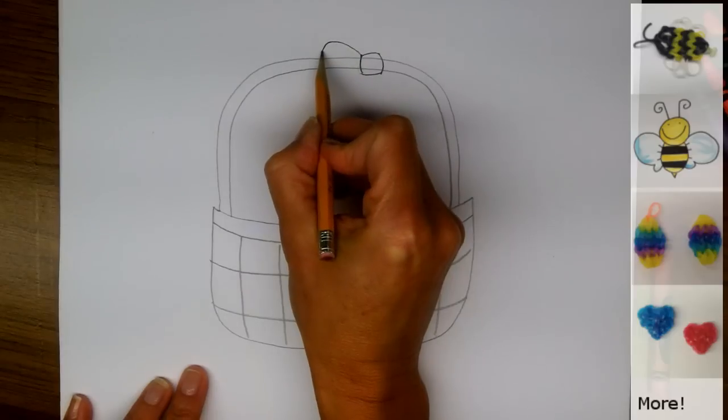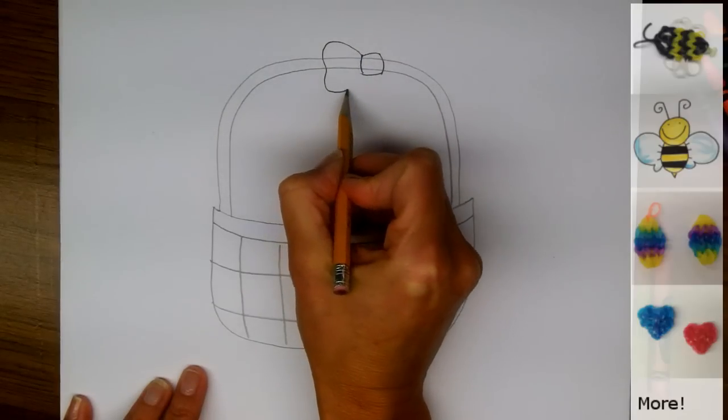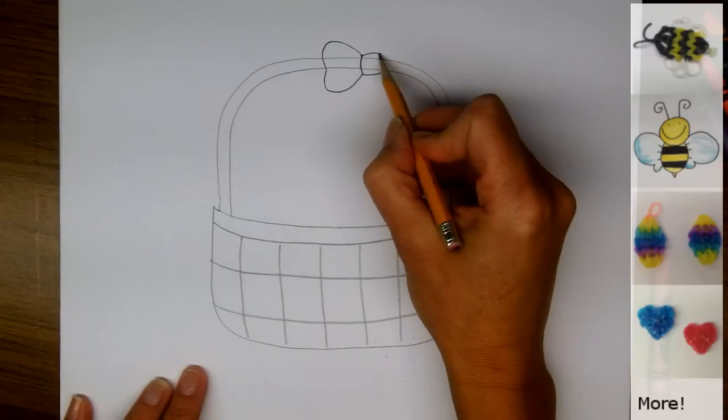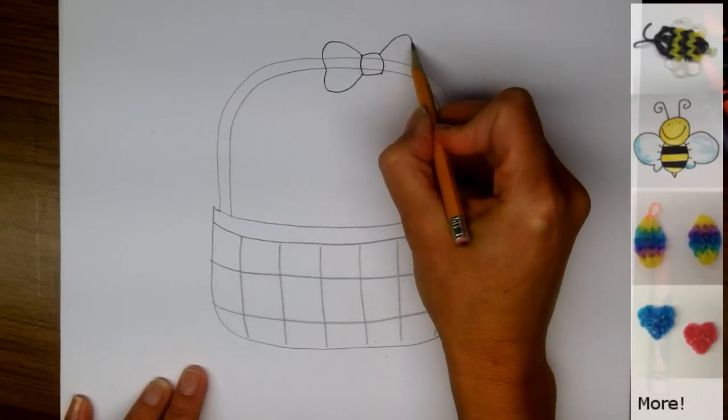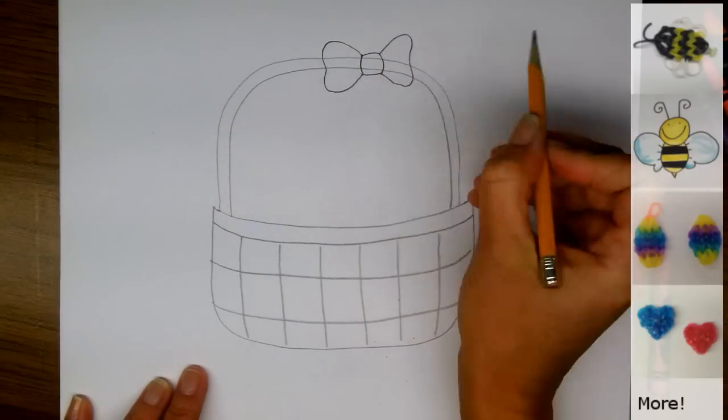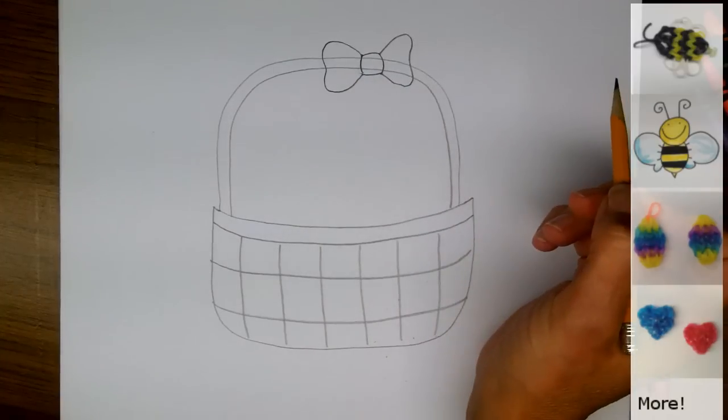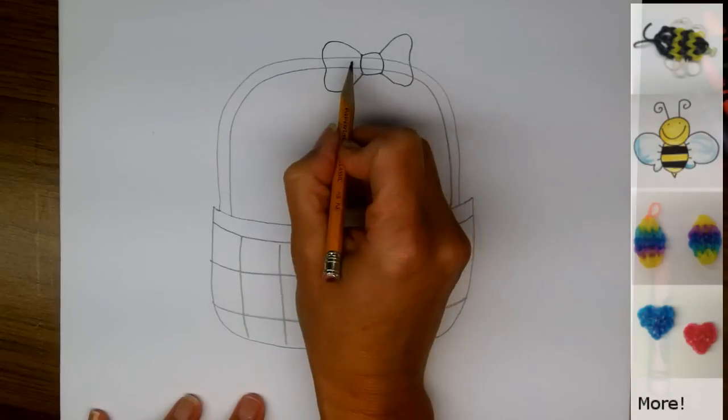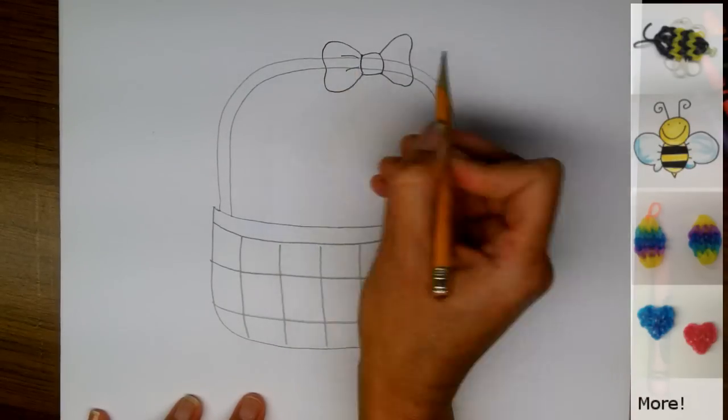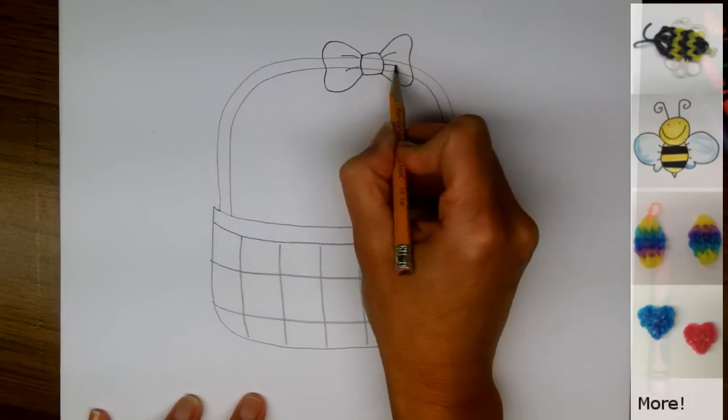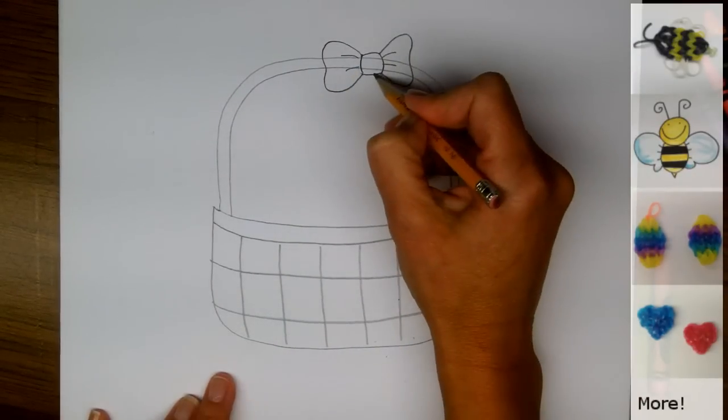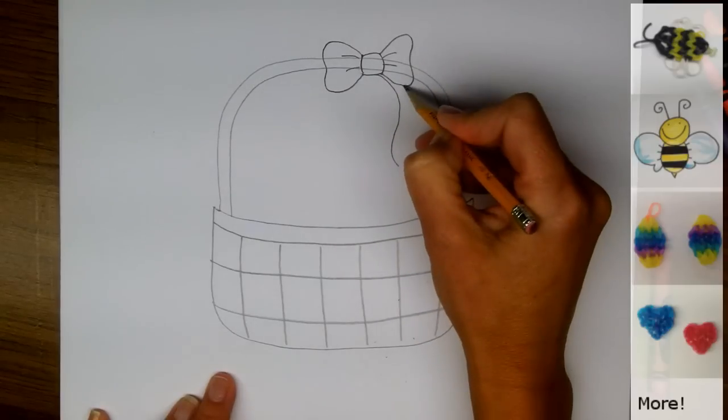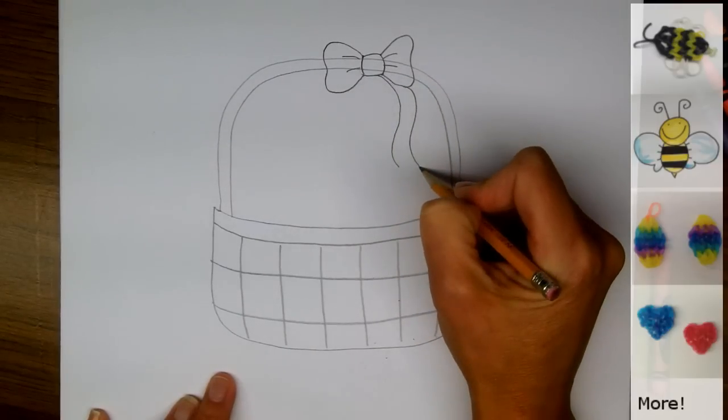It comes out and curves and then comes back in. Same thing on the other side, go out, curve, and back in. So that's sort of like a heart or a dog bone shape. Then we can show the little wrinkles in the bow like this, and you can also draw a ribbon coming down from your bow. My ribbon's a little curvy.